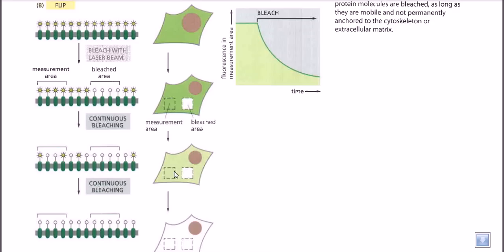If we continue bleaching the exposed area and keep measuring fluorescence elsewhere, we eventually find that the overall fluorescence of the entire cell decreases — even though we never exposed the whole cell membrane to the laser. This occurs because the phospholipid molecules are in rapid motion throughout the membrane.